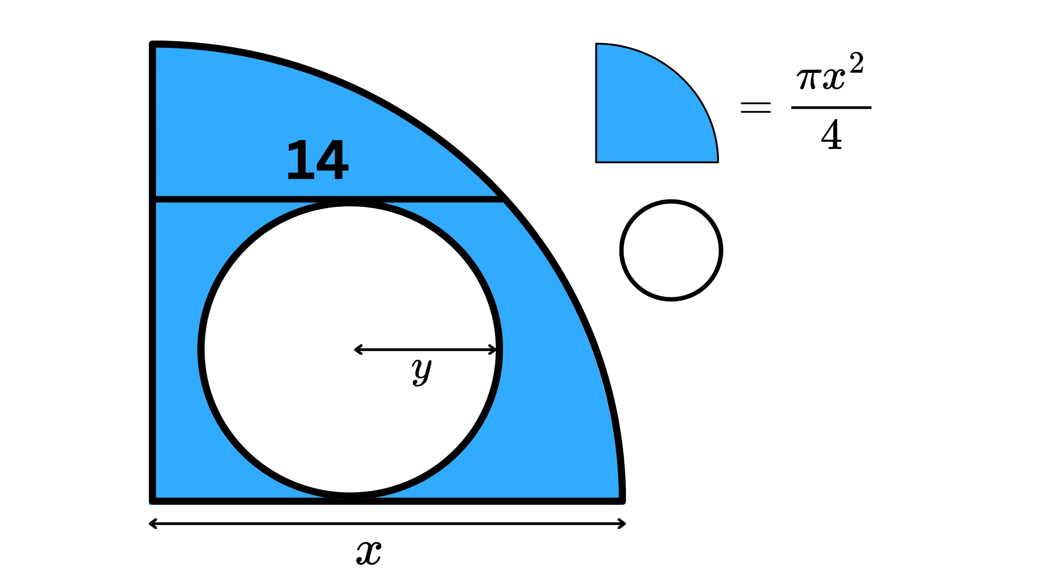So the area of the quarter circle is π times x squared divided by 4, and the area of the full circle is π times y squared. Therefore, the area of the shaded region A is just the difference between the quarter circle and the inner circle, which is π times (x²/4 - y²).